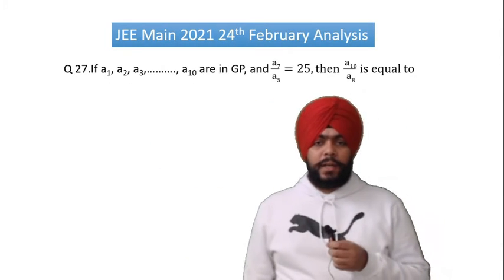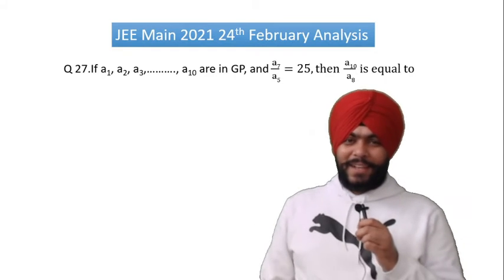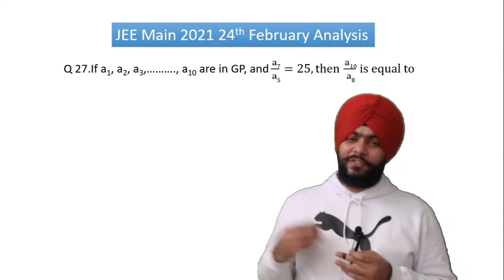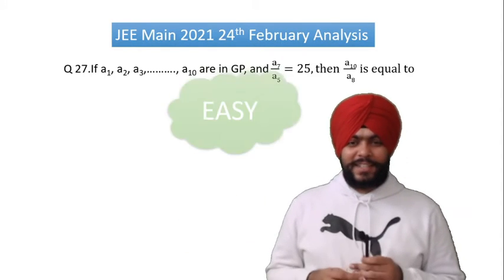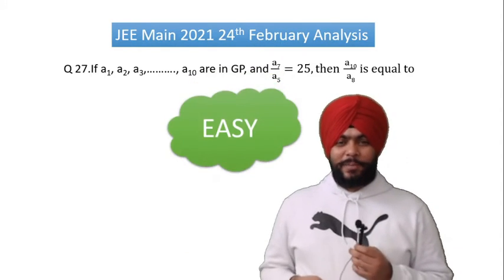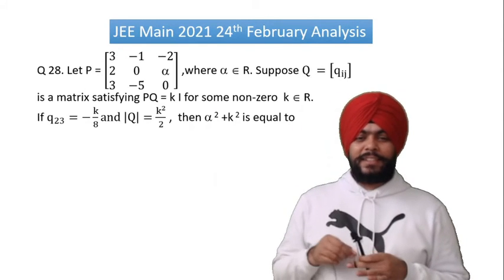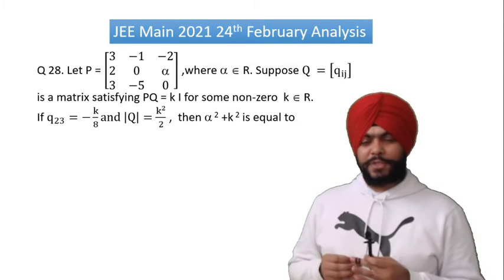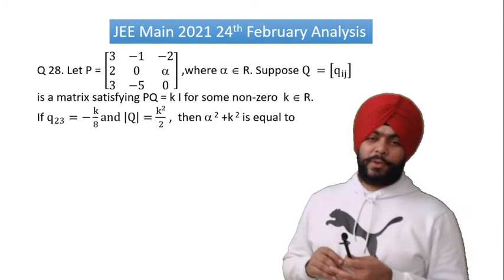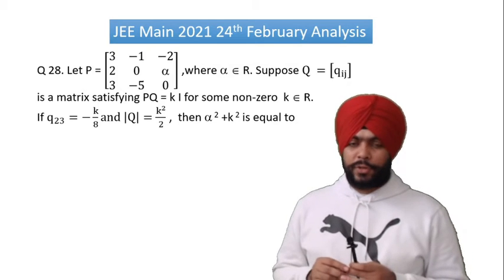Question number 27 is the most easy question — what has been given is directly what they ask. Very easy. Question number 28 is a tough question — it was an integer type question and I would say this type is difficult. No doubt about it.